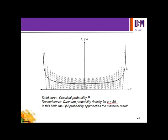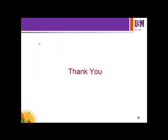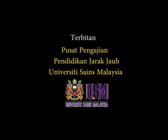In conclusion, the wave functions obtained for different values of N are called Hermite polynomials. The energy levels of a harmonic oscillator are evenly spaced — adjacent energy levels differ by ℏω. Thank you very much for your attention.